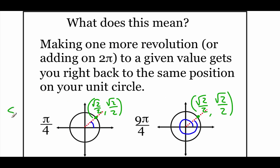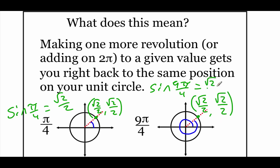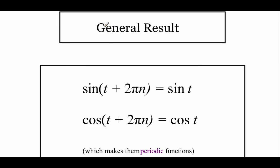So if we're doing the sine of pi over 4, sine means we're looking at the y value, so the answer is root 2 over 2. If we look at 9pi over 4, doing the sine, we still want the y value — it's still root 2 over 2. We get the same answer because these functions are periodic. In general, sine of t plus 2πn equals sine of t, and cosine of t plus any number of 2π rotations equals cosine of t.